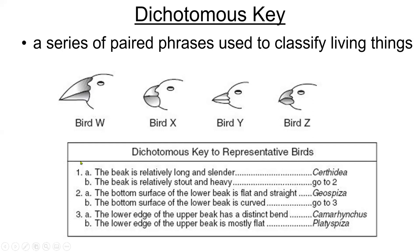You would just follow the statements in order. So you would read 1a, and it says the beak is relatively long and slender. If you're trying to figure out bird W, you would say, I'm looking at bird W — is its beak long and slender? If it is, then it's species Certhidia, but it's not long and slender. So you would look then to the next statement: the beak is relatively stout and heavy. Yes, it's a pretty big beak, it's stout and heavy. So then the direction says to go to statement two.